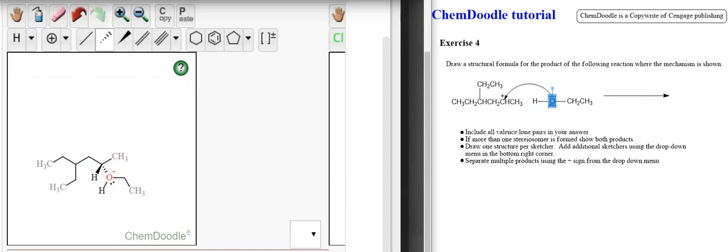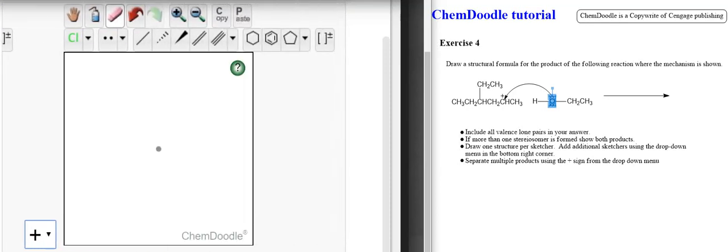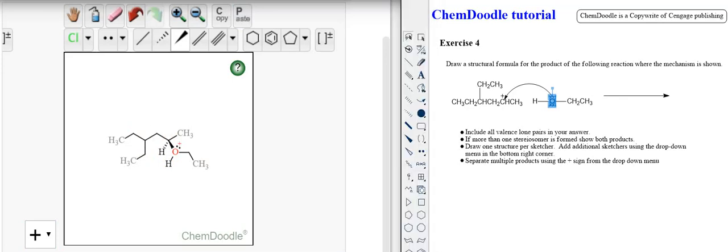And the nice thing about this newer OWL is we can copy everything here. And add it to the new one, and edit it from there to save time. Hit the paste button over here. Change the wedge and the dash. That will be the other enantiomer. And there are your two products, with all the stipulations that they gave over here. And I would hit submit.